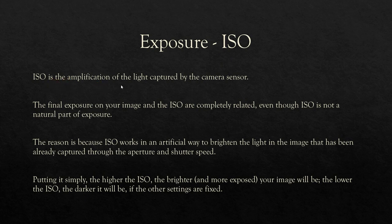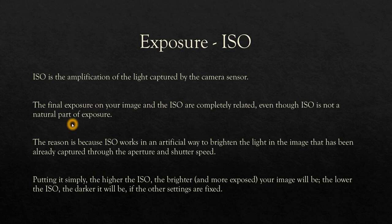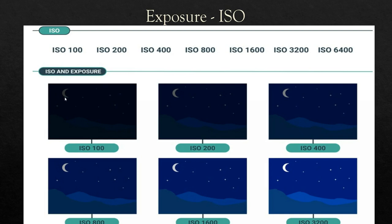ISO is the amplification of the light captured by the camera sensor. Whatever light falls on the sensor is amplified by the ISO value. The higher the ISO, the brighter your image will be because it multiplies the brightness. The lower the ISO, the darker the image will be. You can see examples at ISO 100, 200, 400, and 3200 — at 3200 the image is very clear and detailed.